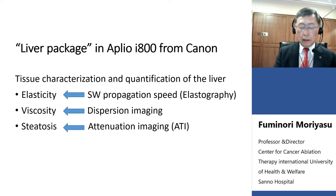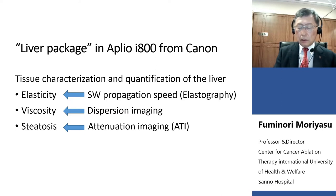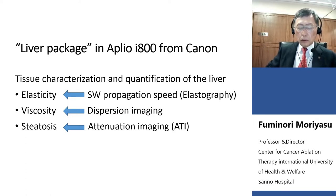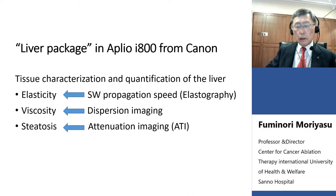The liver package includes three abilities to measure characterization and quantification of liver disorders. One is elasticity measurement using shear wave propagation speed. The second is viscosity measurement using dispersion imaging technology. The third is quantitative measurement using attenuation imaging.